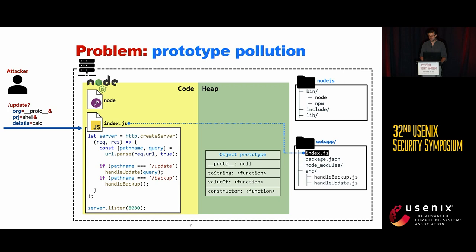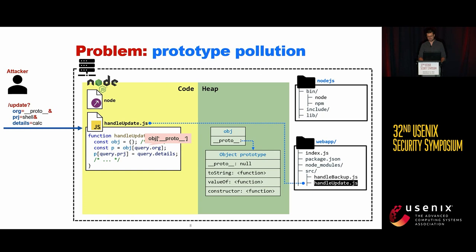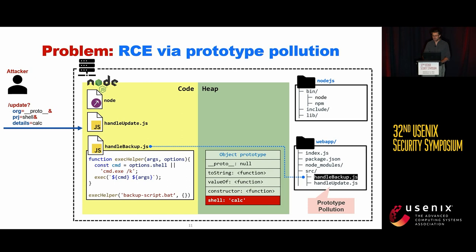Let's see what happens when the parameters are configured by the attacker. The code creates an empty object, reads the proto property, and then the attacker adds the property shell with the value calc to the object prototype. This code pattern is called prototype pollution.